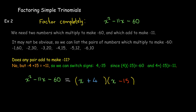There will be two binomials. The first term in each is x, and we used the numbers game to find positive 4 and negative 15 as the second terms.